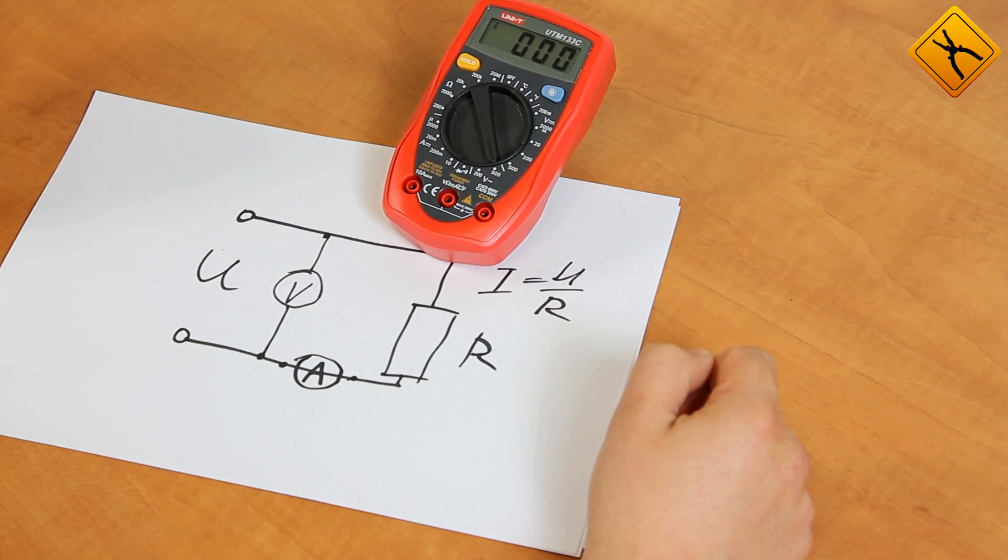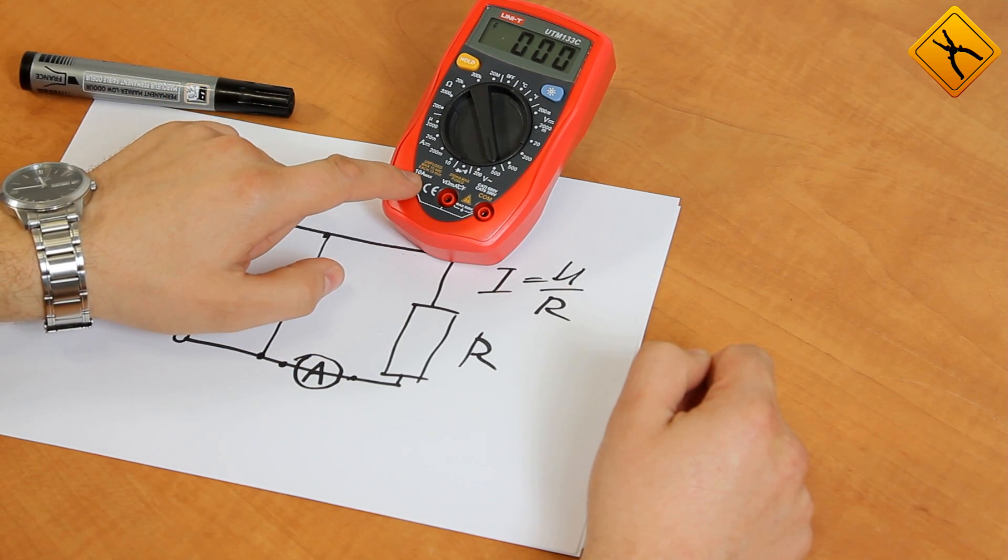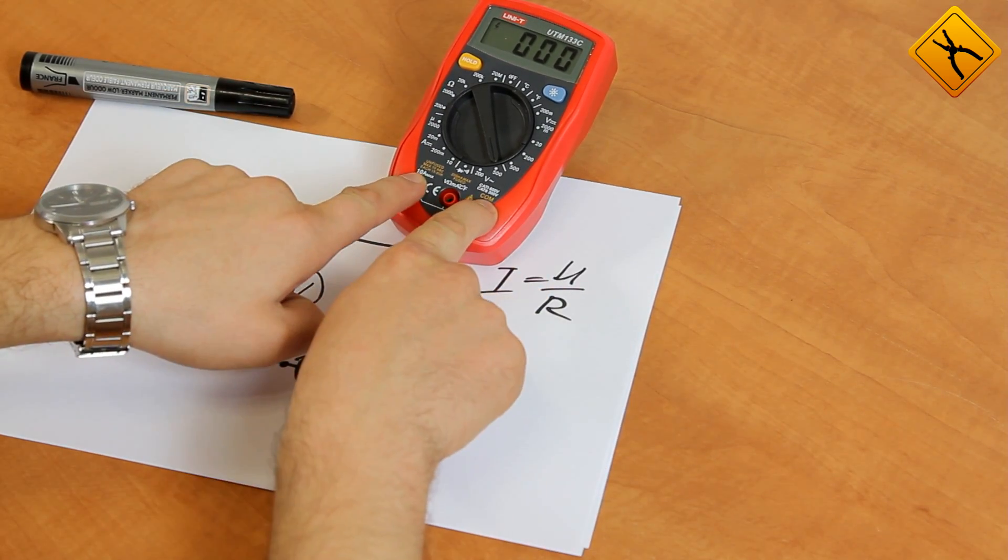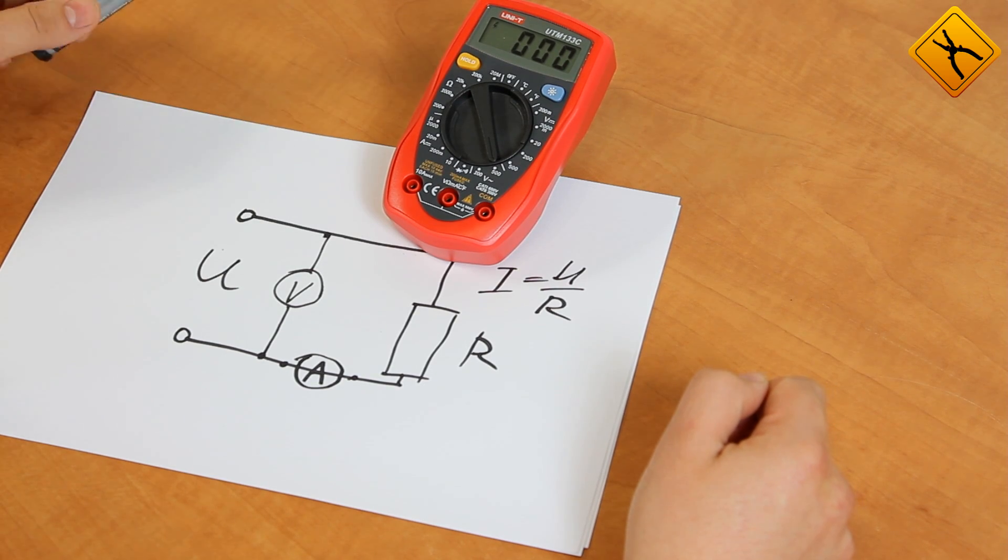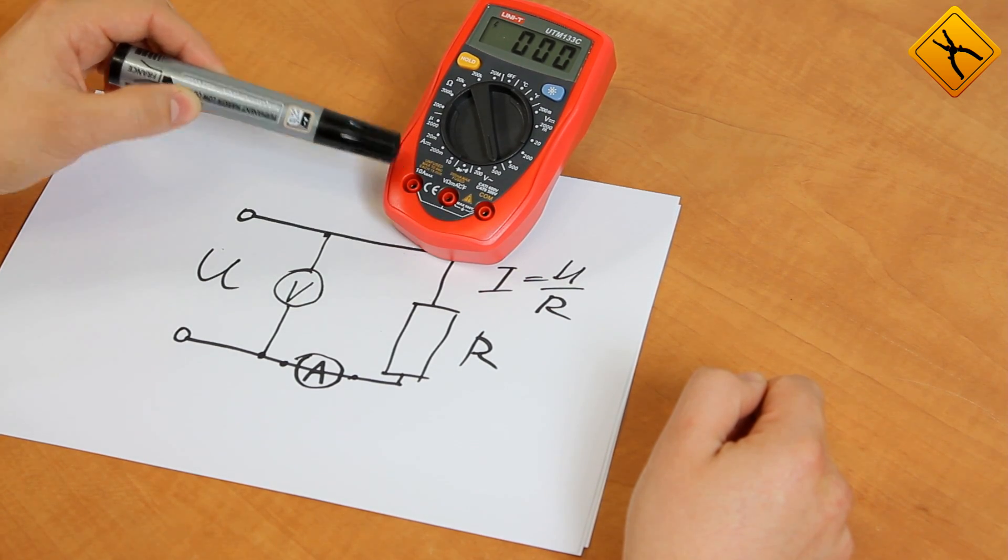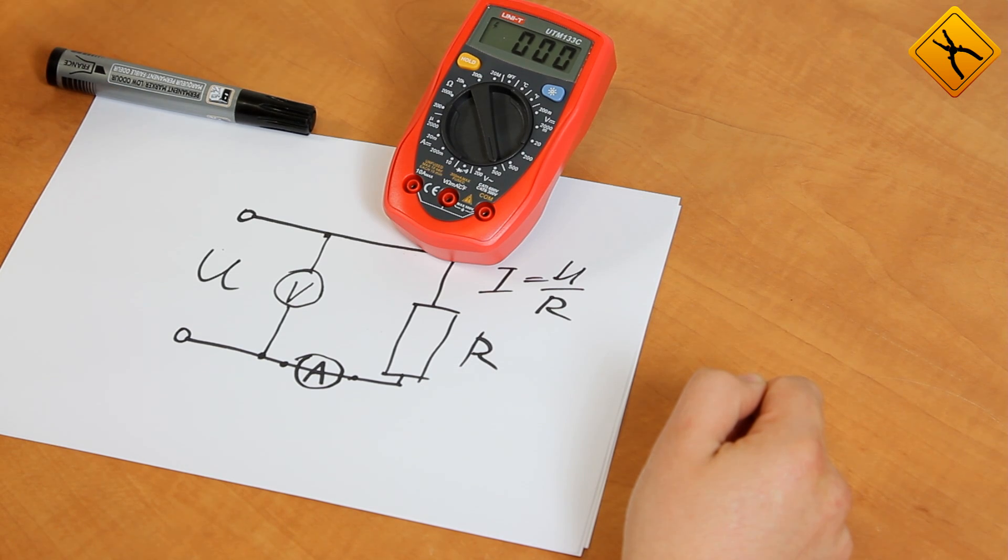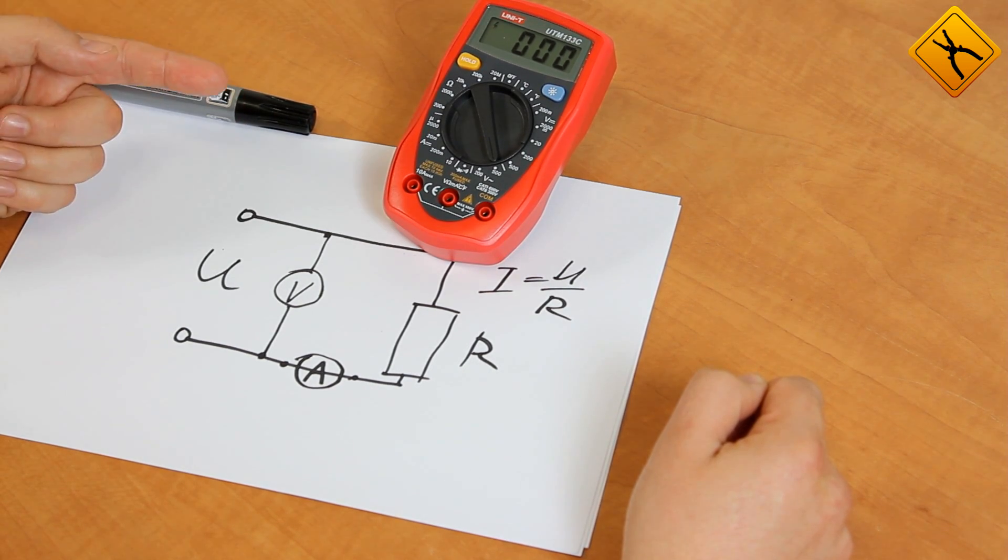One more problem is that most of the low-cost multimeters have no protection in 10 Amper range. There is no fuse here. And if you measure the voltage in the electric line with the probes in these terminals, you will get a short circuit. And as there is no protection, if no auto-circuit breaker works in your building, your multimeter may burn down. And it is a great risk for you.